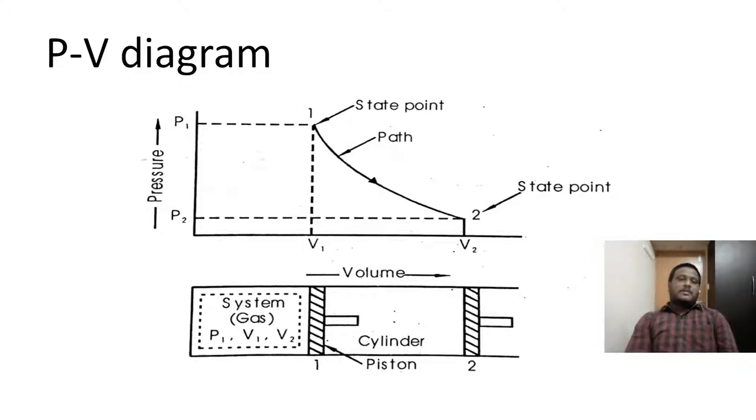To explain the PV diagram, we need an IC engine which is incorporated with the same. In the figure it shows an IC engine. The 1 and 2 represent the initial and final states. In the PV diagram, Y axis represents pressure and X axis represents volume. To fetch the details of this cylinder, we need this PV diagram.